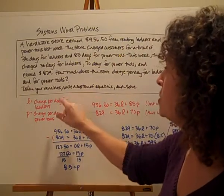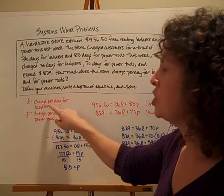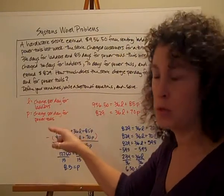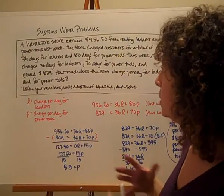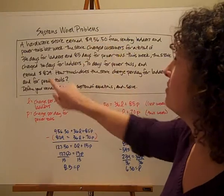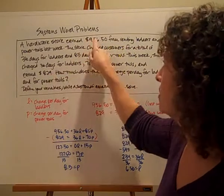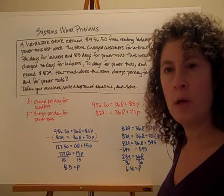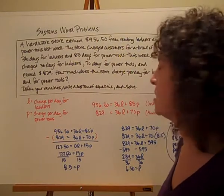First I want to define my variables. We're trying to figure out what am I going to charge per day for the ladder and also what am I going to charge per day for the power tool. When I go to write these equations, I notice that I have kind of a total or an altogether amount. I actually have two totals, which says to me I'm going to be writing two separate equations that are very parallel to each other in how they're set up.